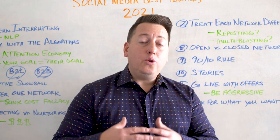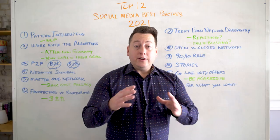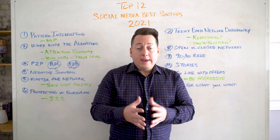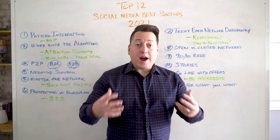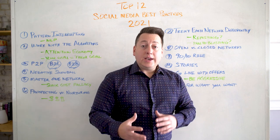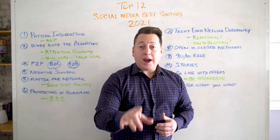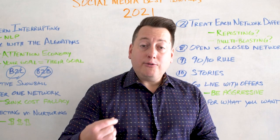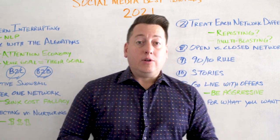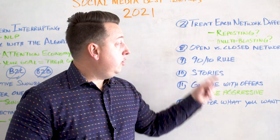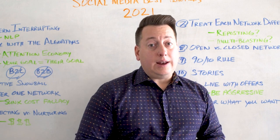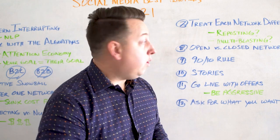Think about what you can do on each network that's different. If you're creating evergreen content, you can break it up and remix it in ways that make sense — use the same types of content but deliver them in different ways. Treat each network differently. Don't repost, don't just blast the same content — these things aren't going to work in 2021.